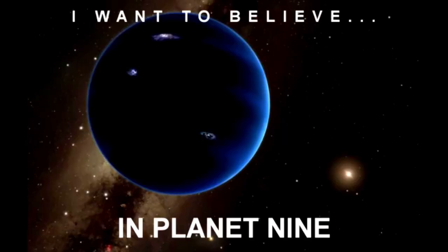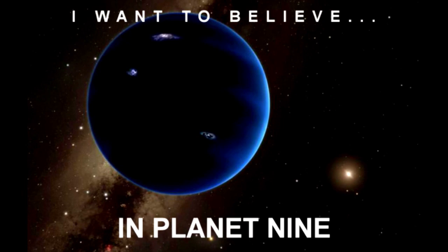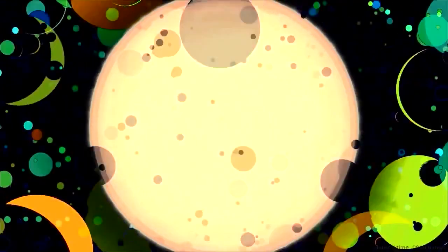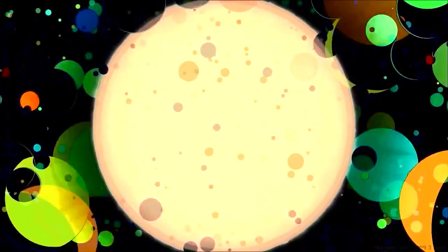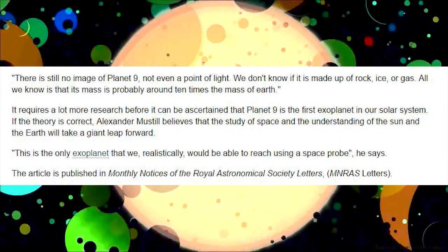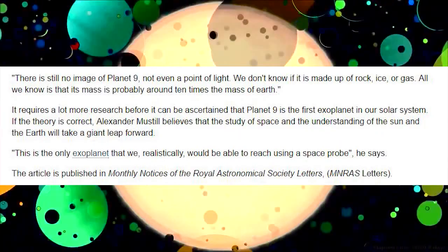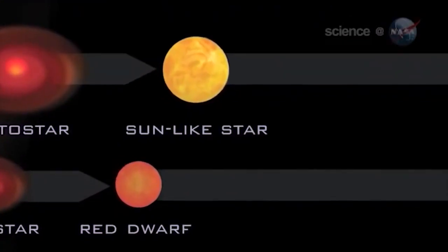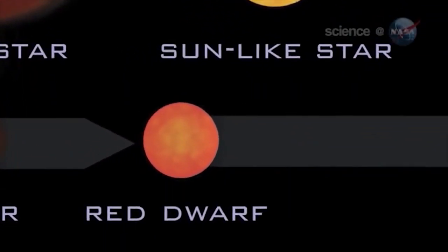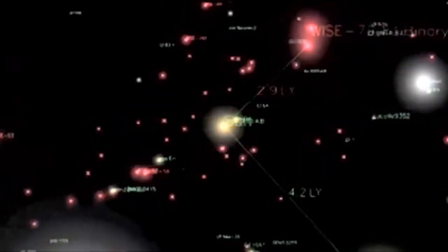There we go, got another good sentence. If the theory is correct, Alexander Mustil believes that the study of space and the understanding of the sun and the Earth will take a giant leap forward. Why is it taking him up so much trouble to find it? This is the only exoplanet that we realistically would be able to reach using a space probe. This planet hasn't even been found, but scientists already know how it got there.